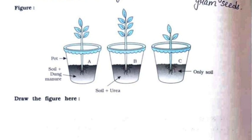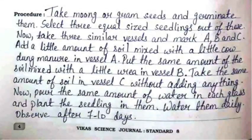The procedure is: take moong or gram seeds and germinate them. Select three equal-sized seedlings out of these. Now take three similar vessels and mark them A, B, and C. Add a little amount of soil mixed with a little cow dung manure in vessel A.